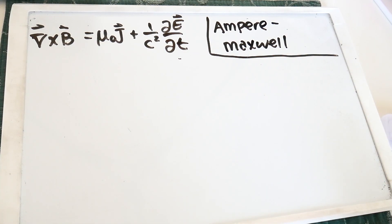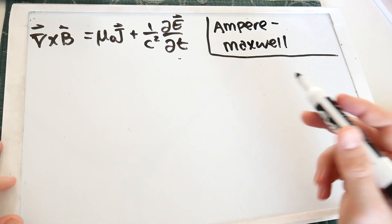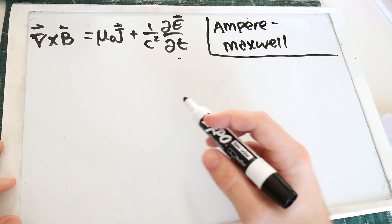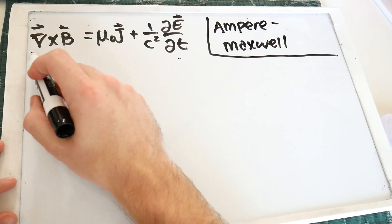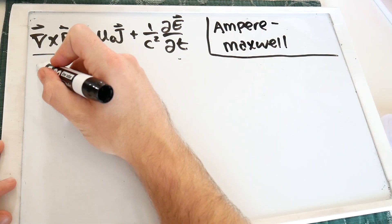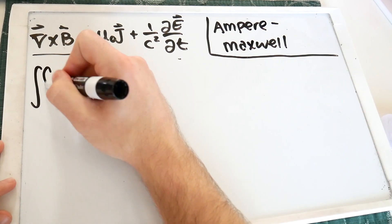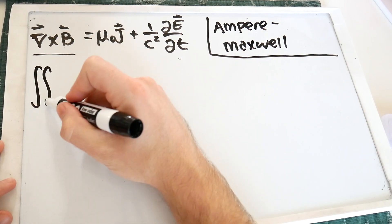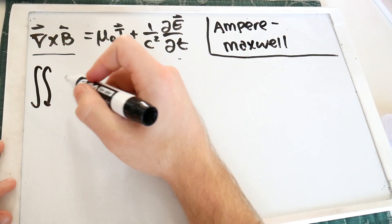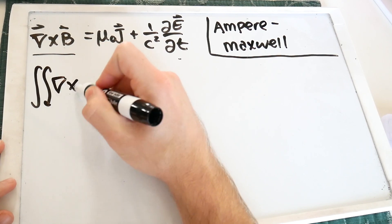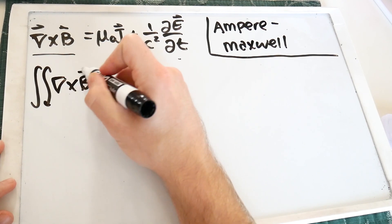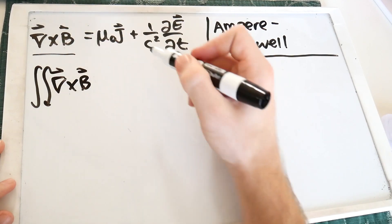This one is the most involved when it comes to converting into integral form, but we're experts now so we can just jump right in. Curl tells us we're going to be using Stokes' theorem, so we write this as the 2D integral of the curl of the magnetic field.